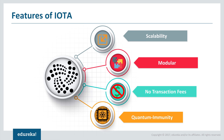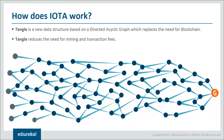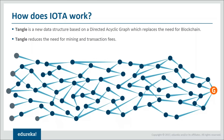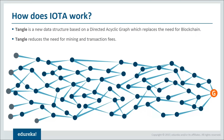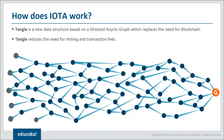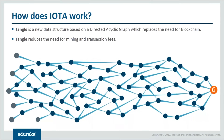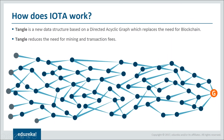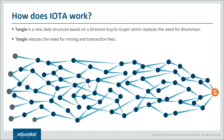Now let's understand how IOTA works and how it's different from other blockchain implementations. In IOTA, there are no blocks or blockchains. IOTA uses a new data structure based on a Directed Acyclic Graph, known as the Tangle, which replaces the need for blockchain as its underlying infrastructure. The use of Tangle reduces the need for mining and transaction fees. Here is a rough representation of how the Tangle looks — each element in it is a directed acyclic element.